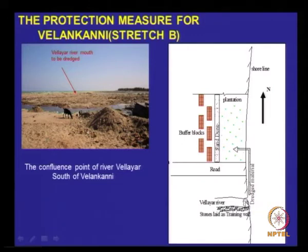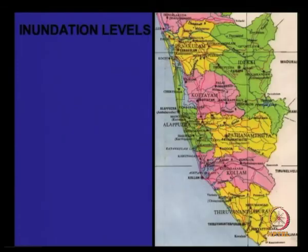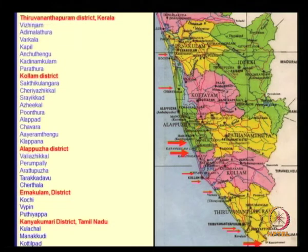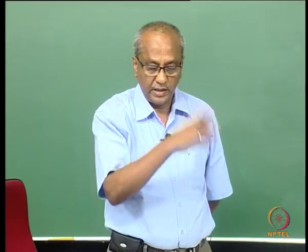Wherever we have rivers adjoining, the suggestion is to remove or clean the river mouth. Some locations show the impact on roads. Now we move on to the west coast.